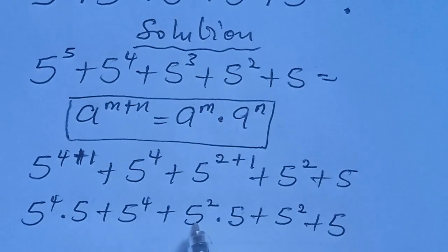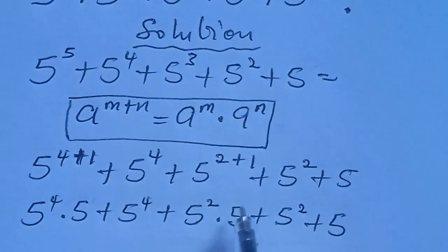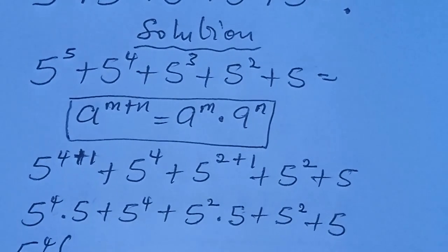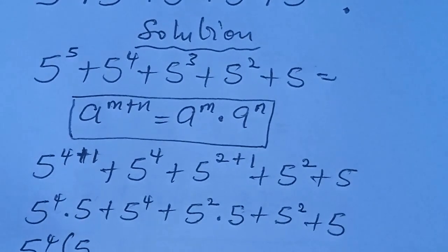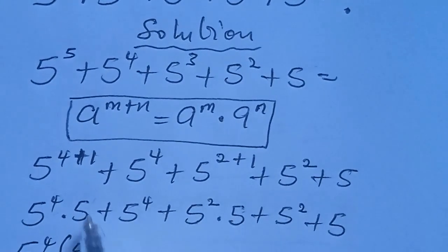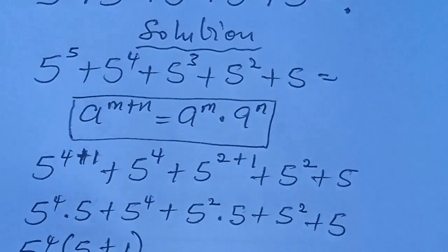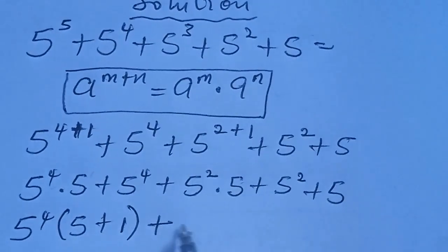From here we can see that 5 to the power of 4 is common in certain terms, and 5 to the power of 2 is common in others. So let's do the factorization. We factor out 5 to the power of 4 from those terms and 5 to the power of 2 from the remaining terms.